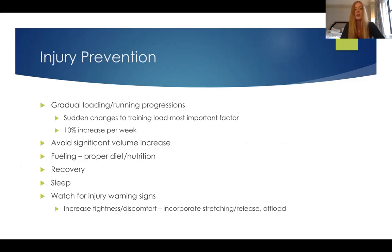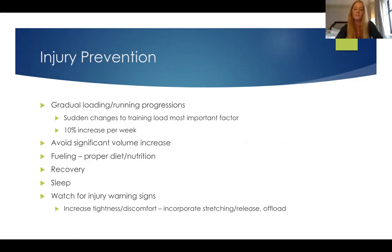For injury prevention, the major factor is gradual loading and a sensible running progression — not just starting and doing ten miles. Sudden changes to load tend to be the most important factor in preventing injury. We commonly reference the ten percent rule: increase your weekly mileage by no more than ten percent. So if you're doing ten kilometers, you only add one extra kilometer the following week. It's quite slow, but over time you build up that load in a safe way.